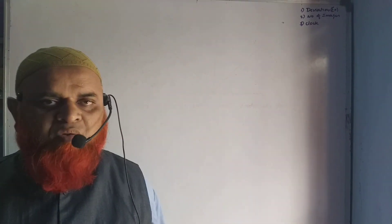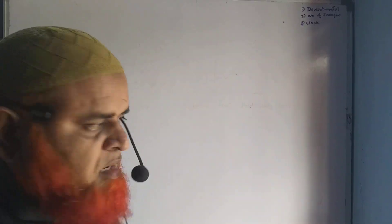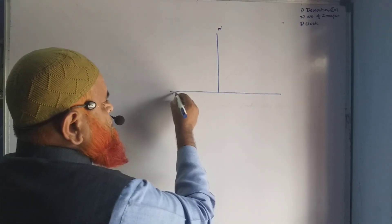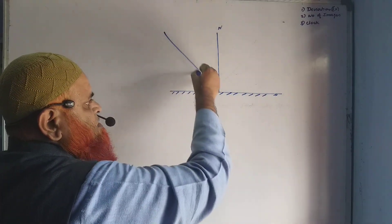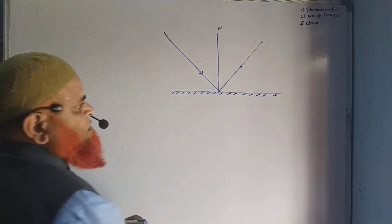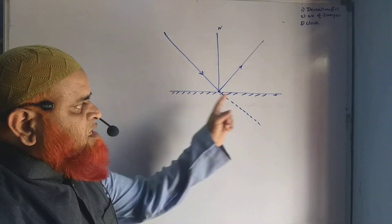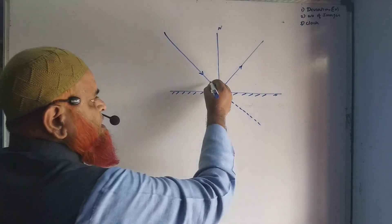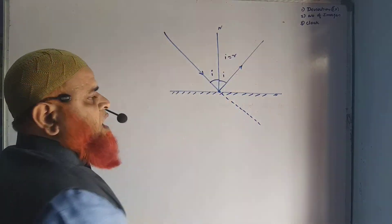Today we are discussing deviation because of a single mirror and deviation because of two mirrors. Here, this is a normal and this is a mirror. A light ray falls, gets reflected back. The light ray would continue straight, but as the mirror is present it is reflected back in the same medium. This angle is i and this is also i, because angle of incidence i equals angle of reflection r.